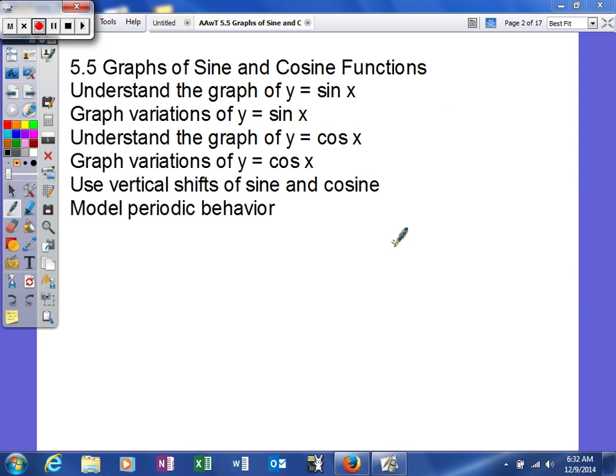Alright, we're going to look at 5.5 next, which is a graph of sine and cosines. To be able to do this, we're going to understand the graph of sine of x, the graph variations of sine of x, understand the graph of cosine of x, graph variations of cosine of x, these vertical shifts of sine and cosine, and model periodic behavior should be fun. Here we go.